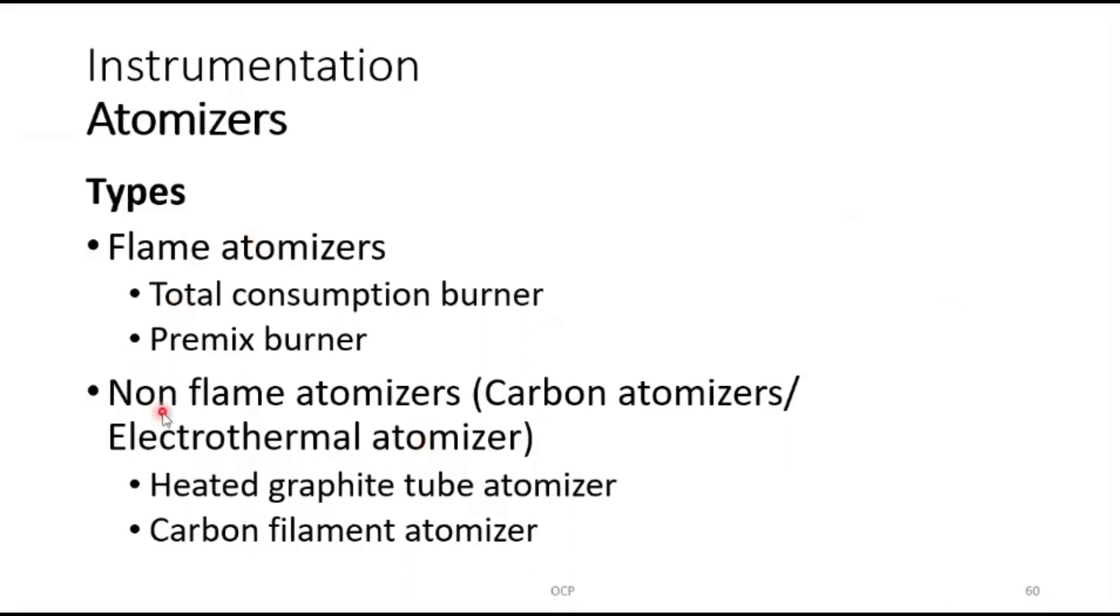Atomizers are of two types: total consumption burner and premix burner, which come under flame atomizers. There are also non-flame atomizers, called carbon atomizers or electrothermal atomizers. These include heated graphite tube atomizers and carbon filament atomizers.